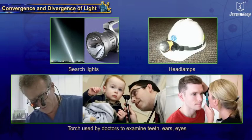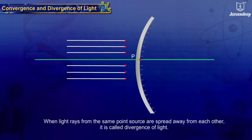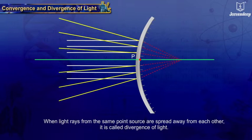Divergence of light: when light rays from the same point source are spread away from each other, it is called divergence of light. When we want to spread light from a source, diverging beam is used.